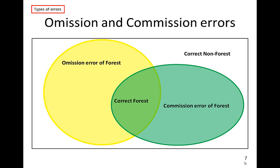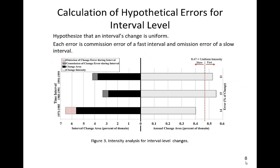We will now turn to an example from our study area. This figure shows the interval level changes for three time intervals. At the interval level, we focus on the deviation between the observed annual change and the uniform annual change. We hypothesize that each interval changes with a uniform intensity. Next, we hypothesize that errors concerning change explain the deviations from the uniform line. The hypothetical error can account for the difference between the uniform intensity and the observed intensity.